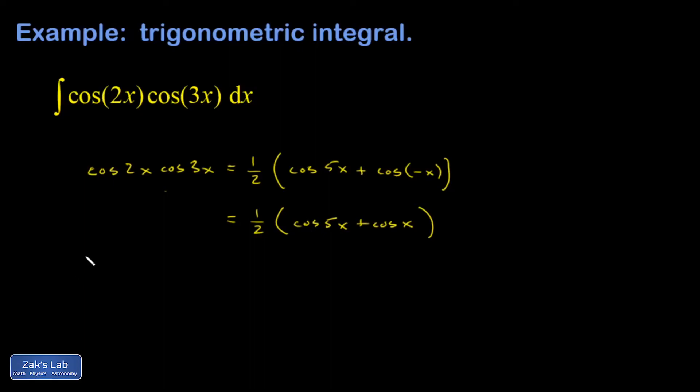And if I give our integral a name just to be notationally complete here, my integral is now the integral—I'm going to move the 1/2 out in front—cosine 5x plus cosine x dx.